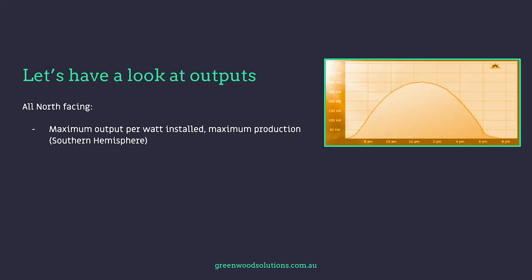With all north-facing, you are maximising your output per watt installed — maximum production — and this is in the southern hemisphere. If we were talking the northern hemisphere, it would be all south-facing; think of facing the equator. This is a traditional bell curve, so the peak output is in the middle of the day. But does this match the consumption profile of the business in question?